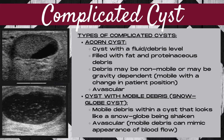The next type of complicated cyst is a cyst with mobile debris, often nicknamed snow globe cysts. The mobile debris within the cyst looks like a snow globe being shaken up — the debris is moving on its own, almost like it's snowing within the cyst. A cyst with mobile debris should be avascular, although because of so much debris motion, the mobile debris can mimic blood flow when using color or power Doppler.